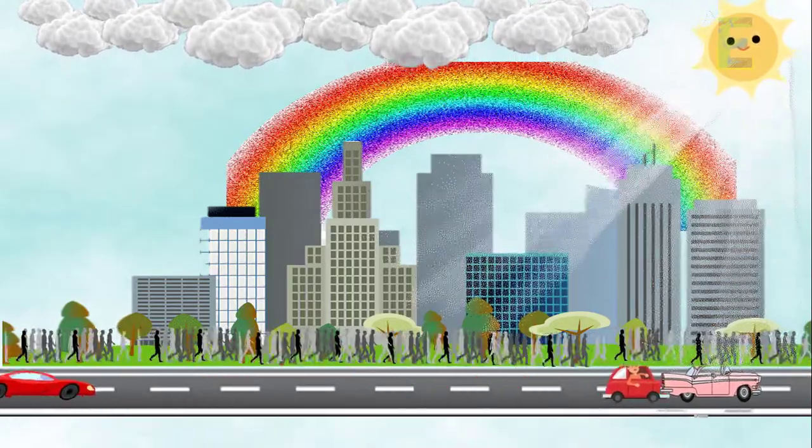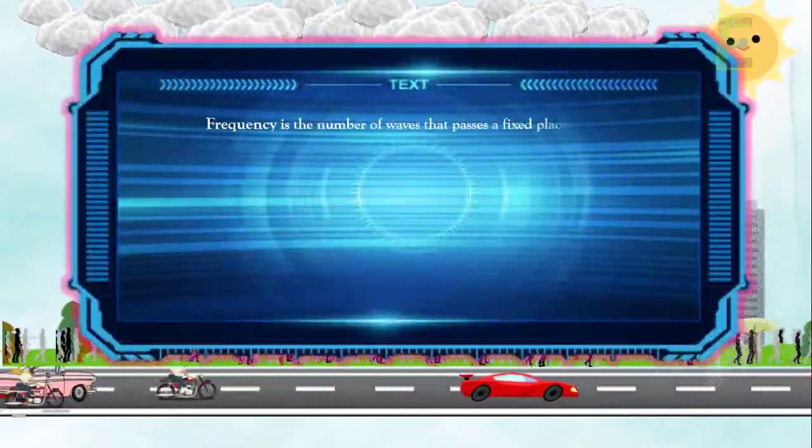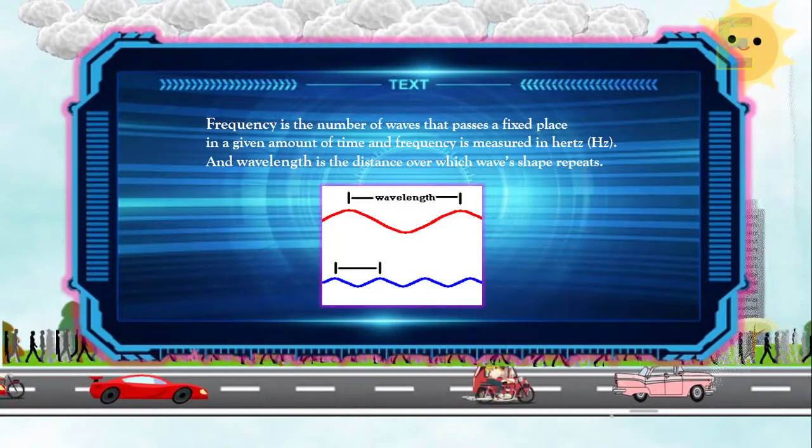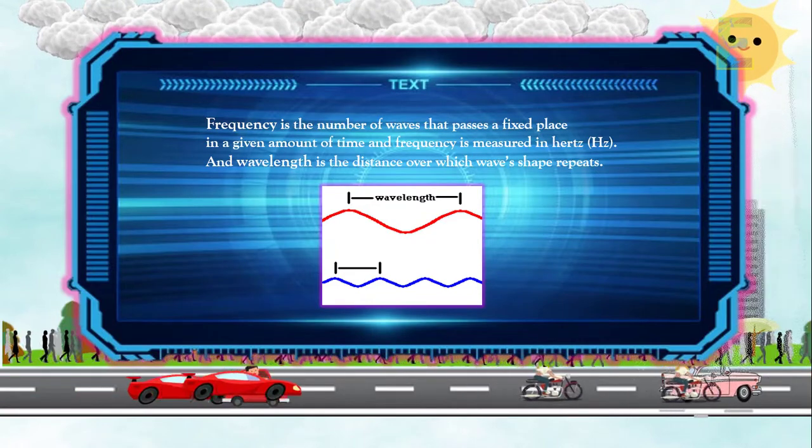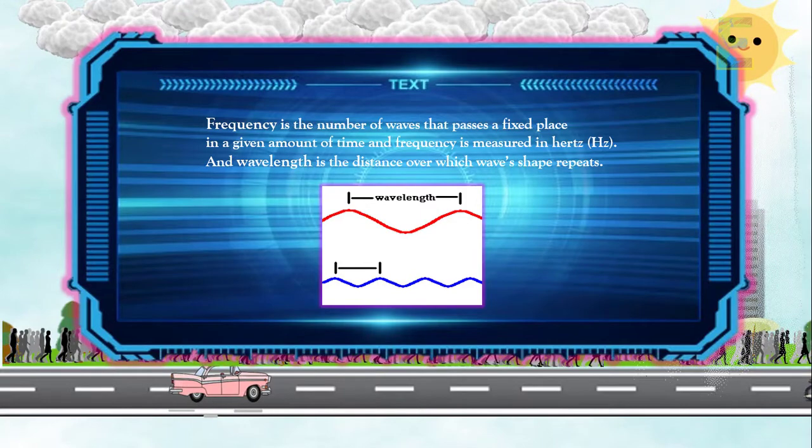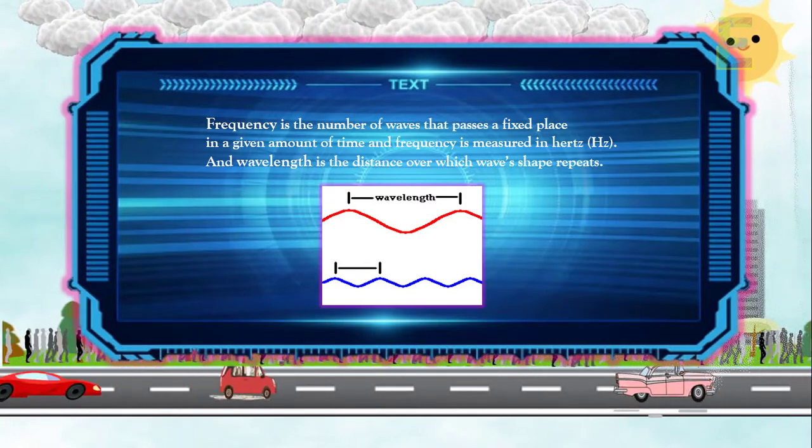By the way, frequency is the number of waves that passes a fixed place in a given amount of time and frequency is measured in Hertz. And wavelength is the distance over which wave shapes repeat.